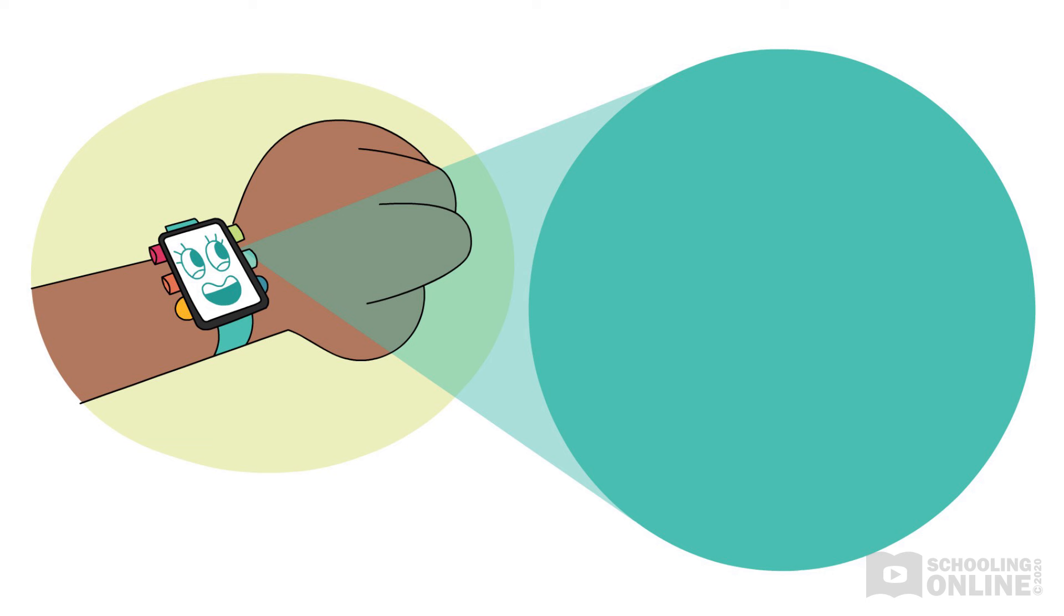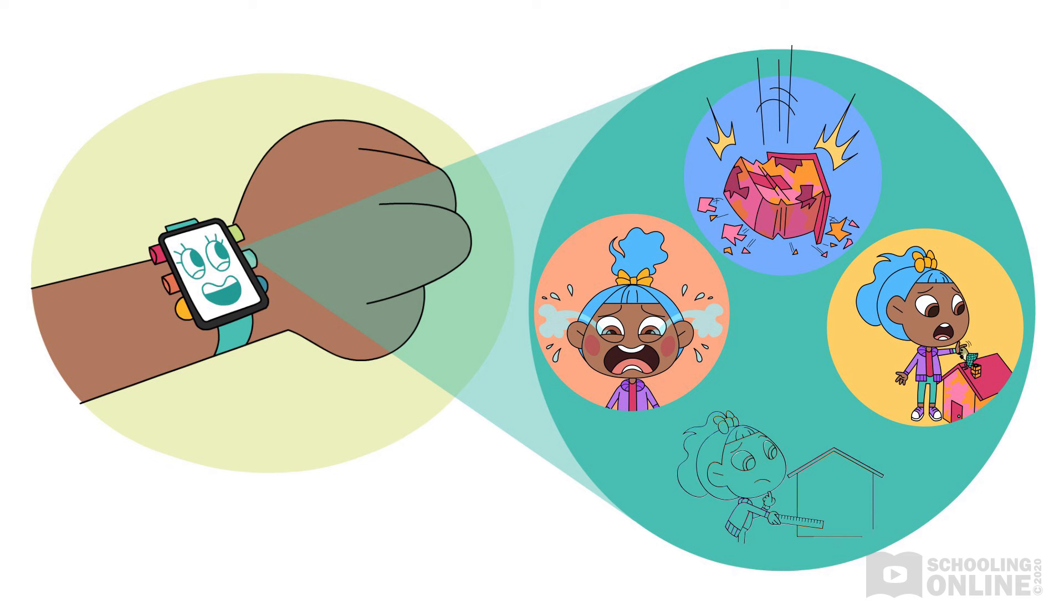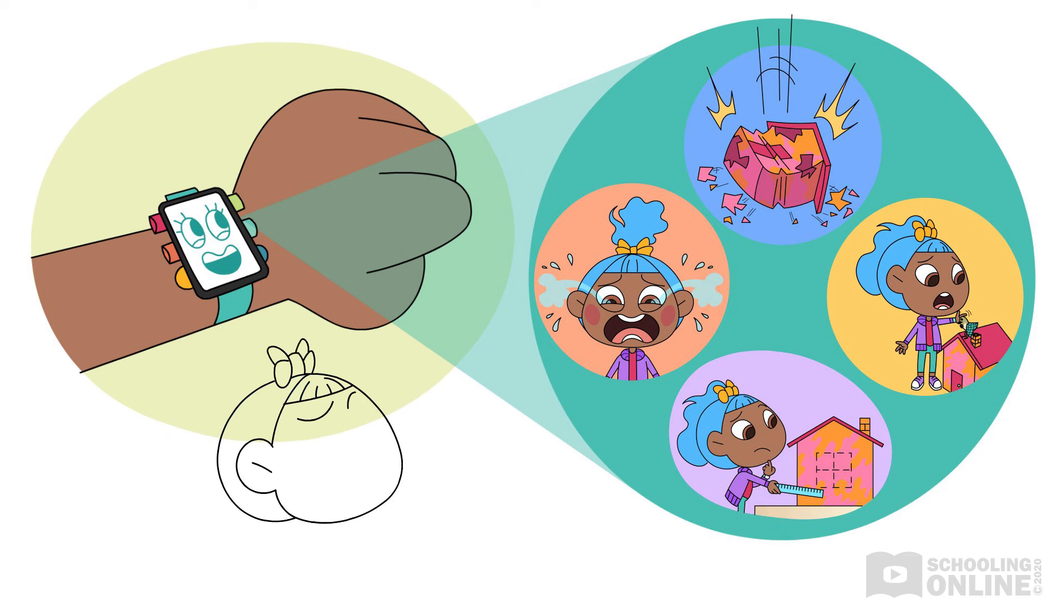TikTok lights up. Bella, you have four choices. You can cry. You can break the birdhouse. You can say sorry to Peppy. Or you can try to fix the birdhouse, TikTok explains.